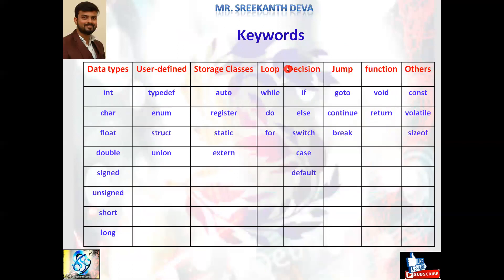These keywords are commonly used in program development. Some keywords are used as data types like int, char, float, double, signed, unsigned, short, and long. Some keywords are used in user-defined types like typedef, enum, struct, and union.